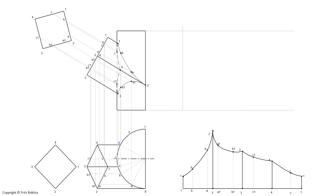From here, we need to determine the length of the development. Because this is a half cylinder, we use the formula pi times diameter. But since this is not a full circle, we divide the diameter by 2. The 60 divided by 2 gives us a radius of 30 mm for this development. We only need 6 segments, and therefore the full development length over these 6 segments is 94.25 mm. We can now draw a light construction line at 94.25 mm on the baseline of our development.